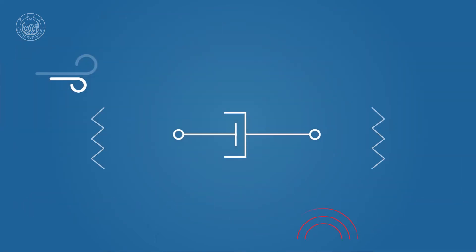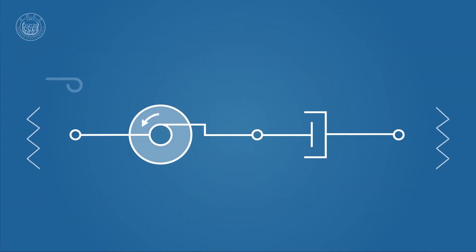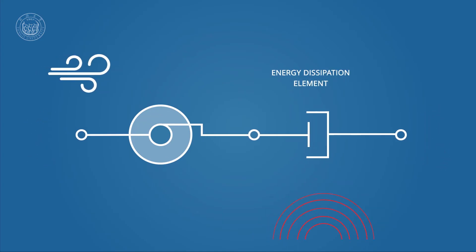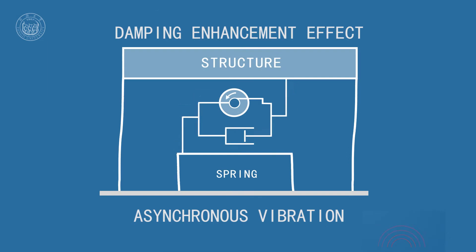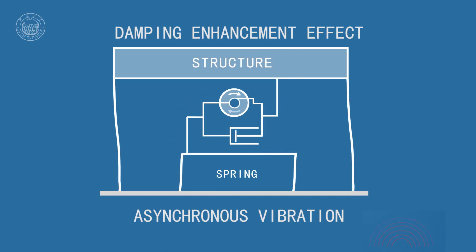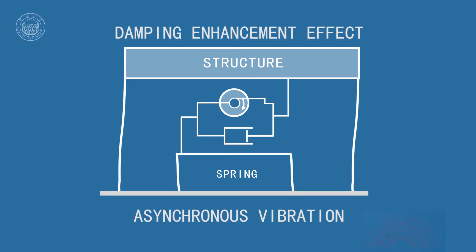By using an inertor, the energy dissipation of the energy dissipation element is significantly increased. This is known as the damping enhancement effect, which yields better results than using an energy dissipation element alone.